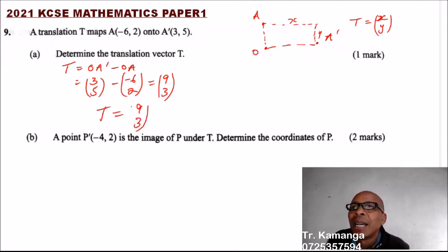A point P'(-4, 2) is the image of P under translation T. Determine the coordinates of P. As we said, translation equals OP' minus OP.